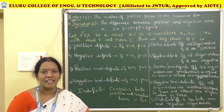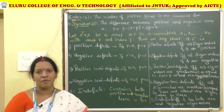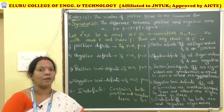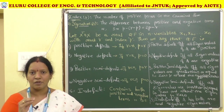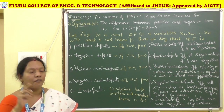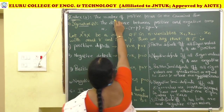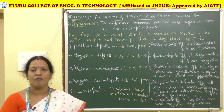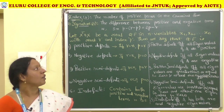The first terminology is index. Index is nothing but the number of positive terms in the canonical form. If we convert this quadratic form into a canonical form, the number of positive terms represents the index of the quadratic form.